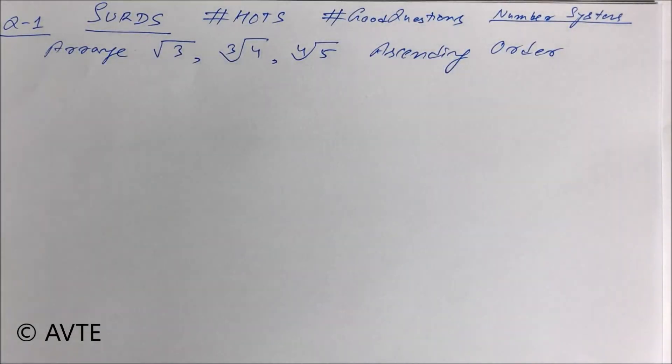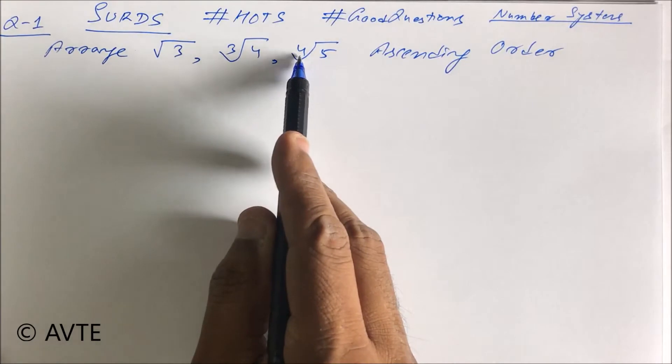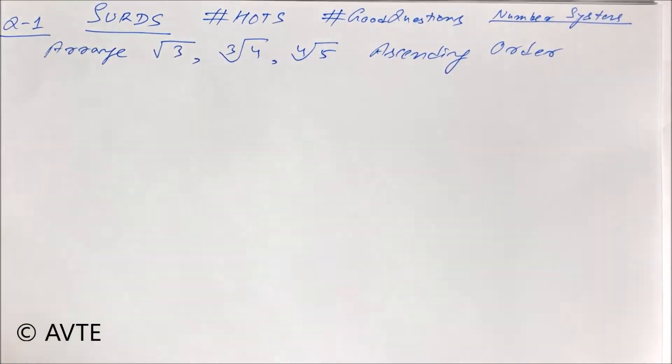So this is a question of surds which contains all orders like order 2, order 3, and order 4 with different bases.